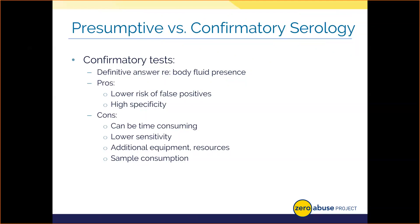For example, knowing and being able to say that a stain is semen versus only being able to say that it's possibly semen from a presumptive test can make a world of difference in substantiating a case of child sexual abuse. The potential concern with these tests is that they can take several minutes and require additional equipment, and budget limitations are not foreign to crime labs.